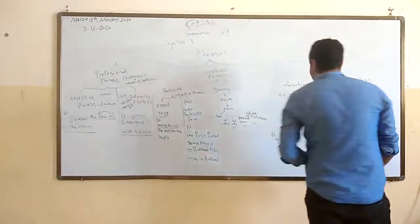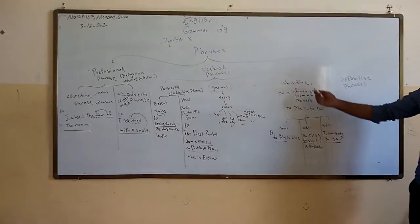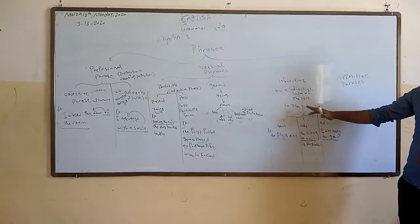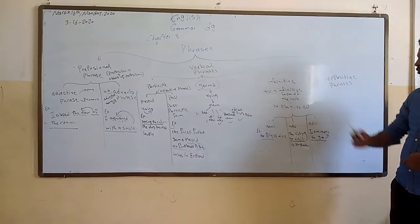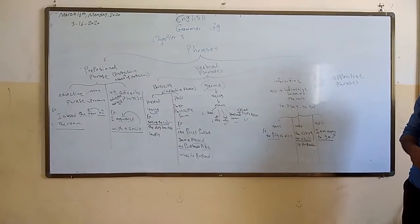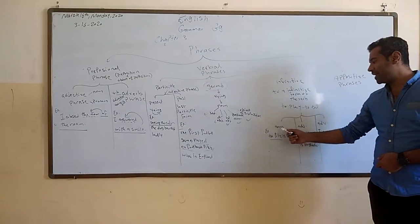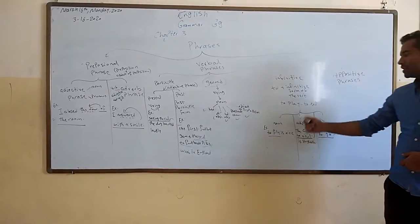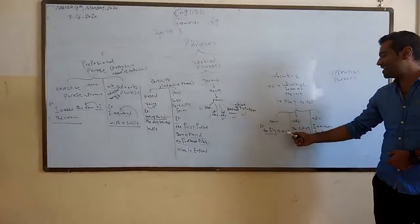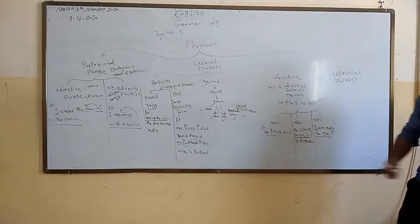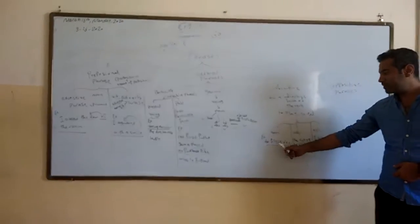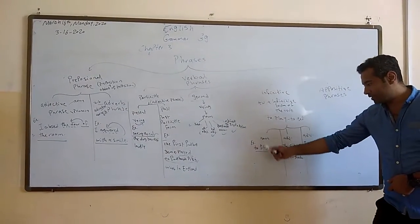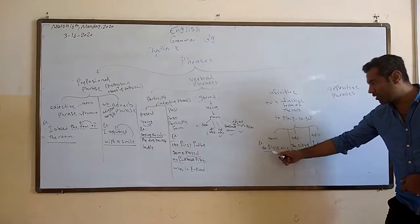The last one is the infinitive phrase, which we took last week. The infinitive means 'to' plus the base form of the verb — like 'to play,' 'to eat,' 'to drink,' and any infinitive verb. It can function as a noun, adjective, or adverb. For example, as a noun: 'To fly is nice.' Here 'to fly' works as a noun — specifically as the subject of the sentence.